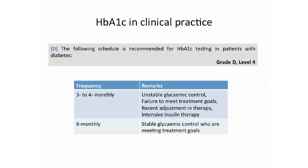Regarding HbA1c testing frequency, there is no change from the 2006 guideline. Testing should be done every 3 to 4 months for patients with unstable glycemic control, those who have failed to meet treatment goals, or those requiring intensive insulin therapy. For very stable patients consistently achieving 6 to 7%, you can lower the frequency to perhaps 6 monthly.